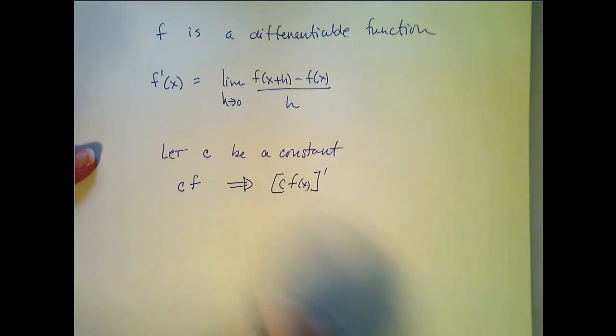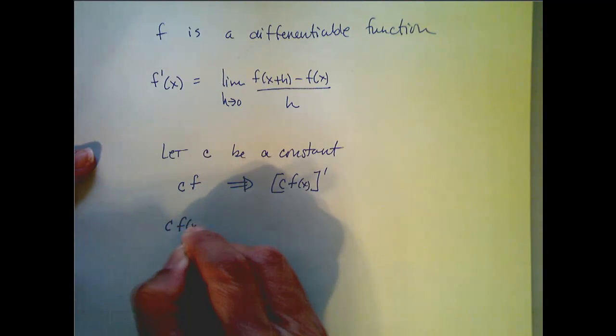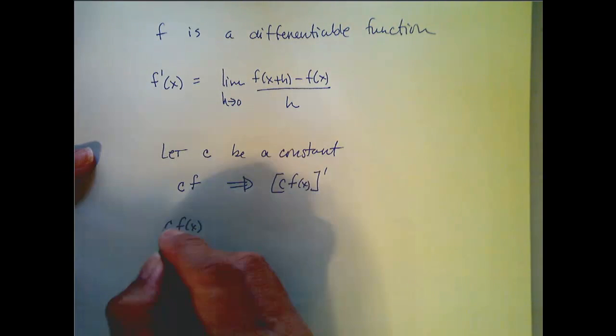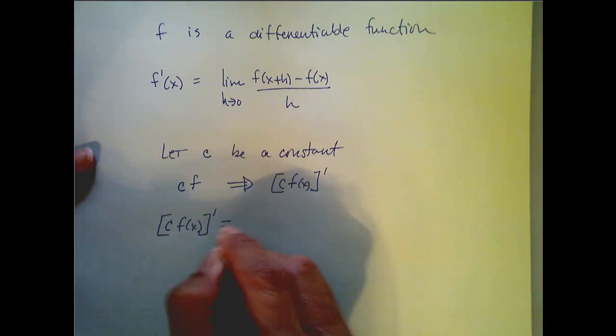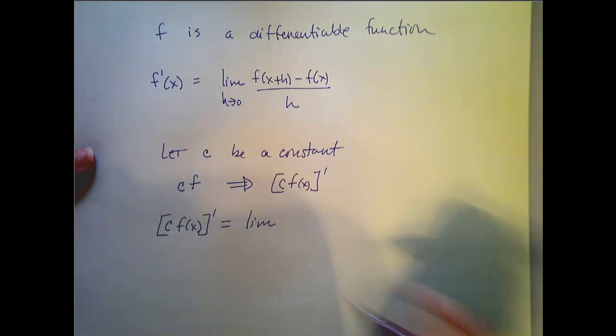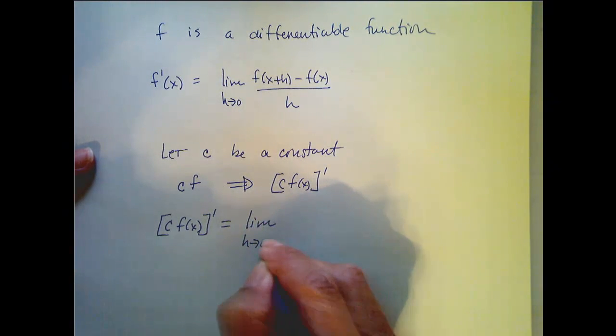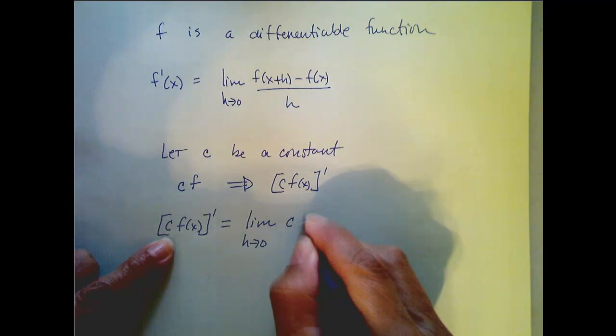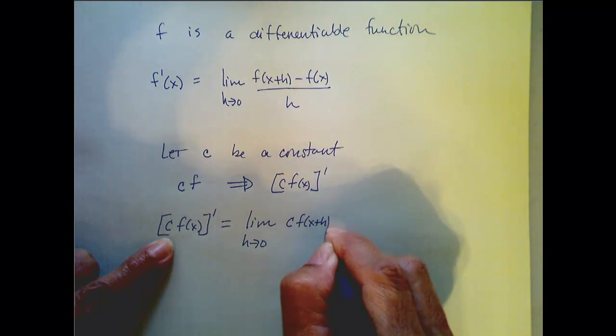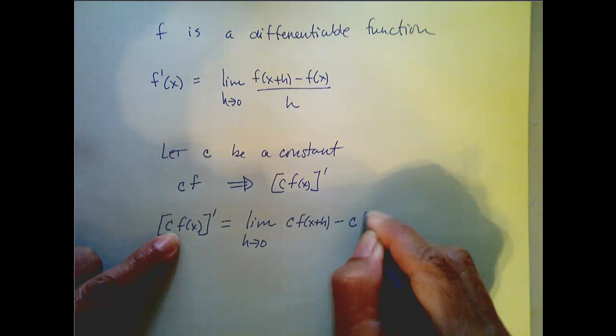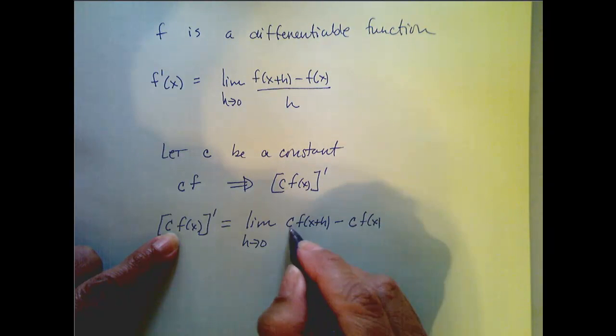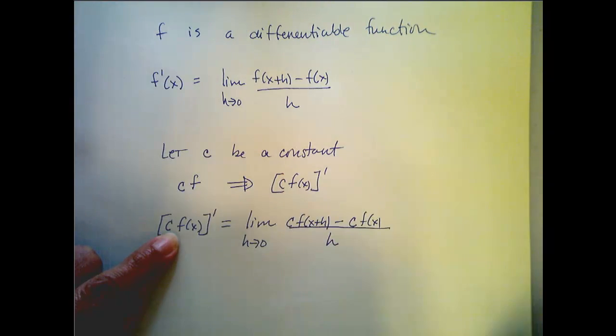Alright? Well, c times f of x, if I want to take its derivative, I'm going to use this notation, it's equal to the limit as h goes to zero of c times f of x plus h minus c times f of x. This is how I define my function, all over h.